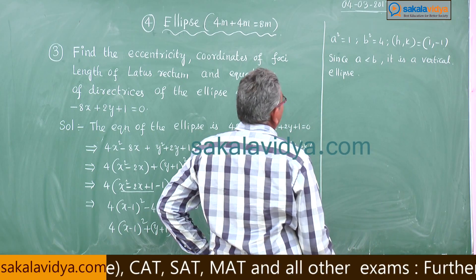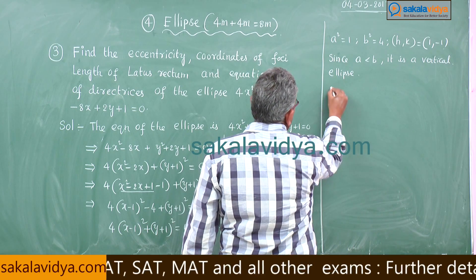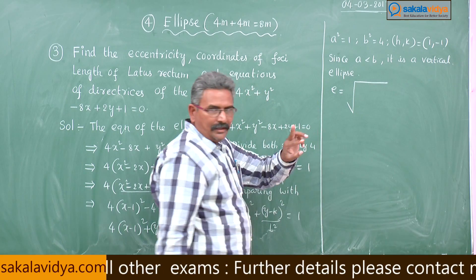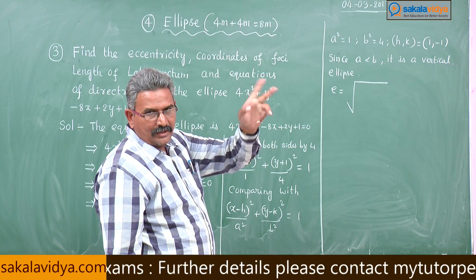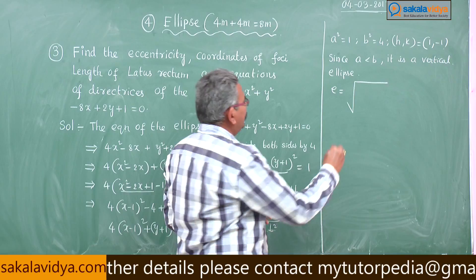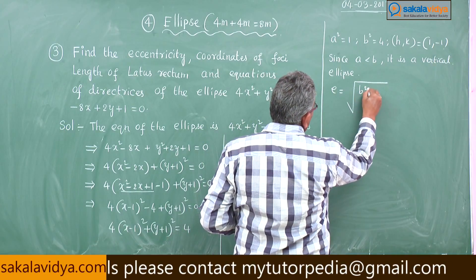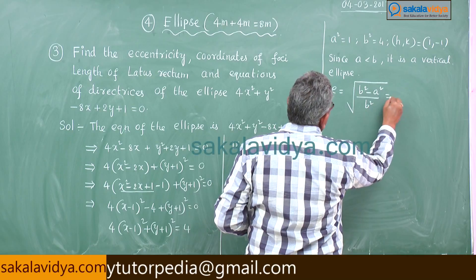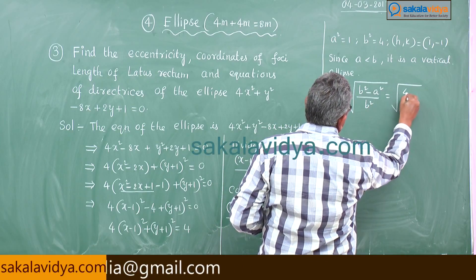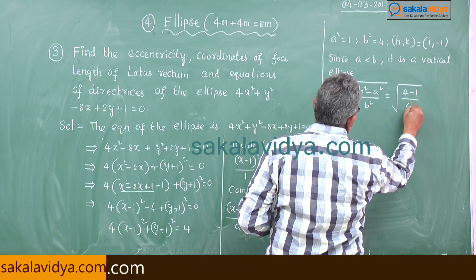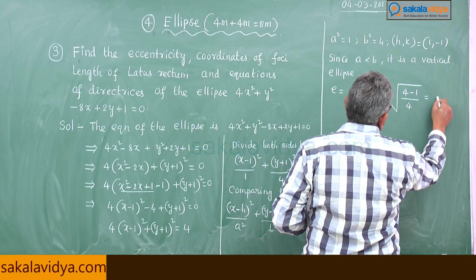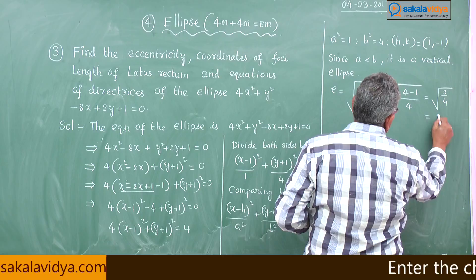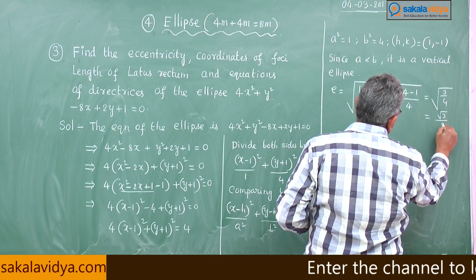First, let us find the eccentricity. For a vertical ellipse, e = √((b² - a²) / b²) = √((4 - 1) / 4) = √(3/4) = √3 / 2. So e = √3 / 2.